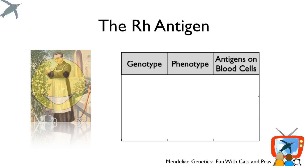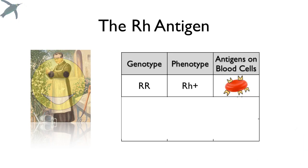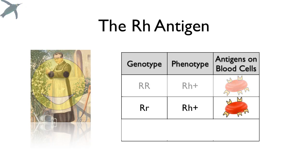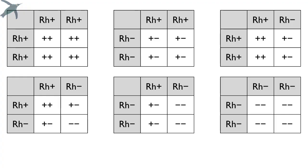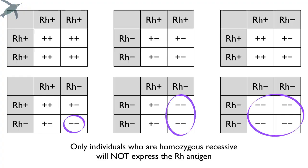We're going to look at the different options — there are only three, as is typical for Mendelian genetics. Individuals who are homozygous dominant (capital R, capital R) express the RH antigen on their red blood cells. Individuals who are heterozygous — that dominant one will mask the recessive one — are also RH positive. The only way to not express the RH antigen is to be homozygous recessive. Only individuals who are homozygous recessive will not express the RH antigen on their blood cells; everybody else will.